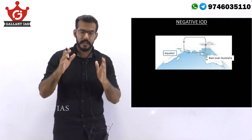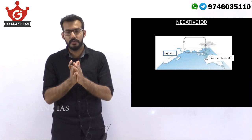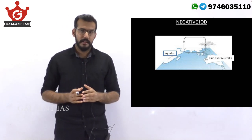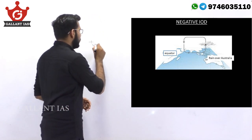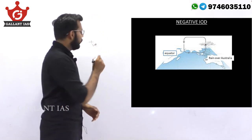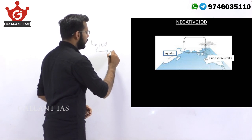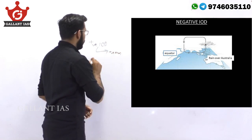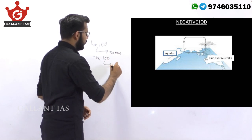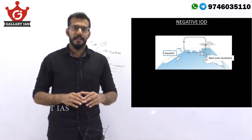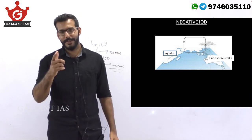Now, you need to be very careful and thorough about the impact of Indian Ocean Dipole on India. An easy way to remember is that a positive IOD leads to a positive monsoon, and a negative IOD leads to a negative monsoon. That's all about IOD. Thanks for watching — we'll see you soon.